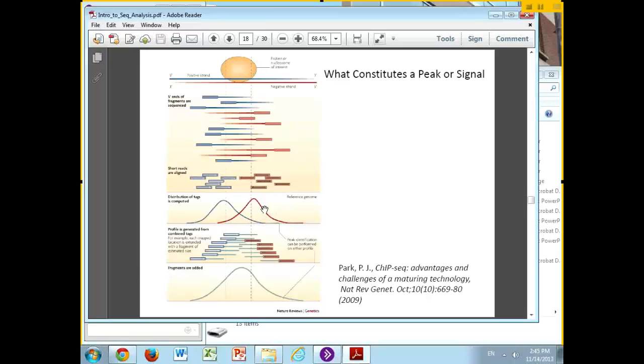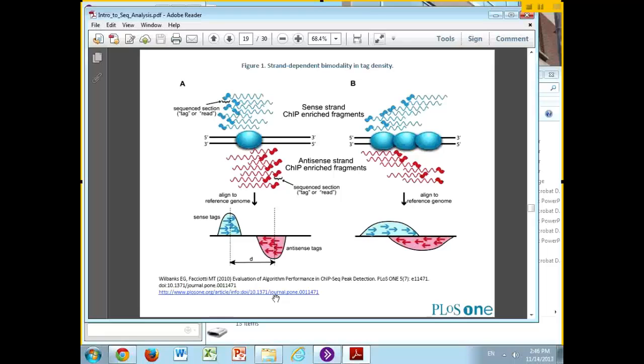You would have some algorithm that would decide that these two peaks are in fact peaks, and that it should find some middle ground between them, which is the actual distribution of the unknown part of the sequence that we did not actually get sequenced. This is the general area where that protein was bound.